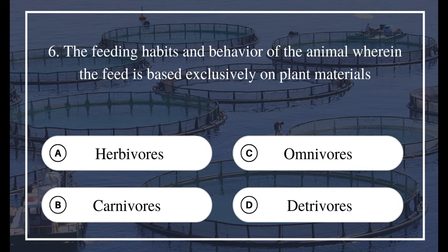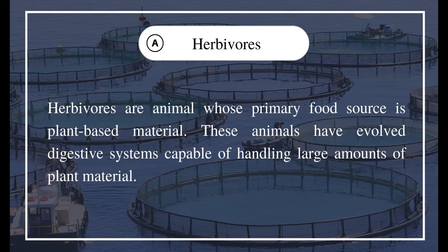Question 6: The feeding habit and behavior of an animal wherein the feed is based exclusively on plant materials — A) Herbivores, B) Carnivores, C) Omnivores, D) Detritivores. The answer is A) Herbivores. Herbivores are animals whose primary food source is plant-based material. These animals have evolved digestive systems capable of handling large amounts of plant material.